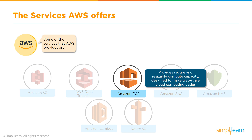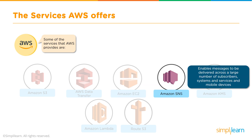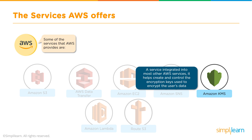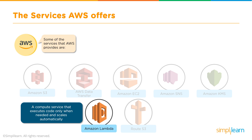Then there's EC2, Elastic Compute Cloud — a resizable computer where you can change the size anytime based on need or forecast. We also have Simple Notification Service, which sends notifications through email or SMS for things like alarms or service notifications. For security, there's KMS, Key Management Service, which uses AES 256-bit encryption to encrypt data at rest. And there's Lambda, a service where you pay only for the seconds it takes to execute your code — not for the infrastructure itself.